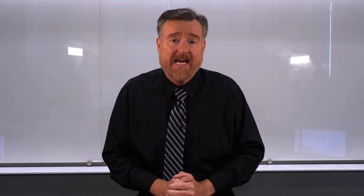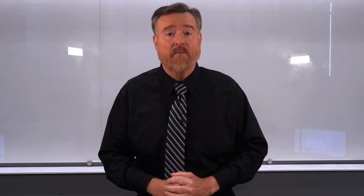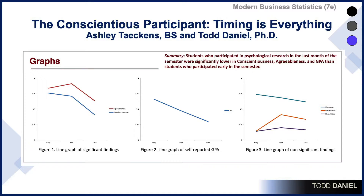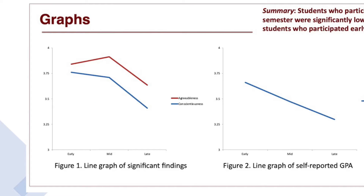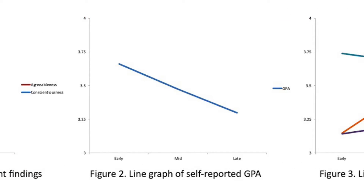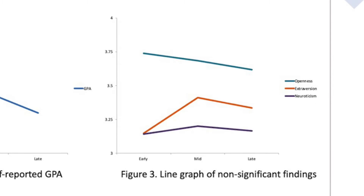Ashley helped me analyze the data, and she created an award-winning poster. This first graph shows the significant findings. The blue line is conscientiousness; the red line is agreeableness. We see that the level of conscientiousness is roughly the same at the beginning and at midterms. However, both agreeableness and conscientiousness drop off statistically significantly for students who were participating late in the semester. Another significant finding was the line graph of self-reported GPA: GPA dropped by midterms and dropped again by late in the semester. The non-significant findings were for openness, extroversion, and neuroticism.